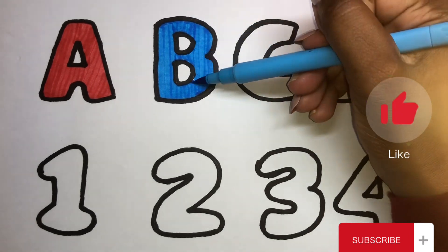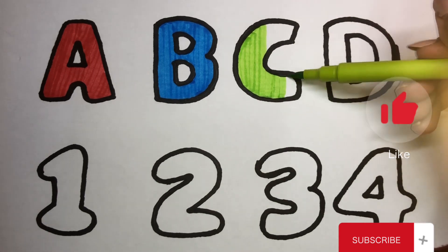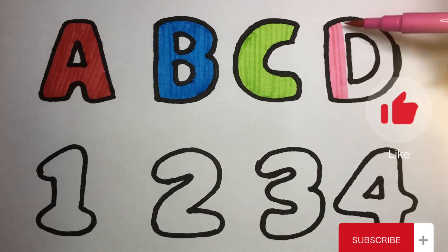One, two, three, four, five, six, seven, eight, nine. Green color. Nine, ten. Pink color.